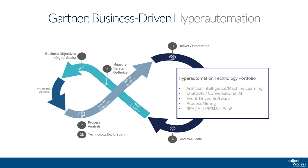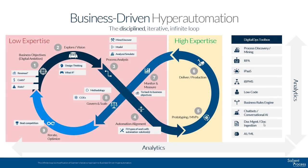First, let's look at Gartner's hyper automation loop. This is their depiction of the infinite loop companies need to perform to get the most out of automation. We're going to create our own version of this and walk you step-by-step through the concept of hyper automation. We believe our version is better — we think you'll agree. This is Salient's version of the hyper automation infinite loop, which describes the core areas of hyper automation and how you can get there. During the presentation, we'll cover every aspect of this loop.